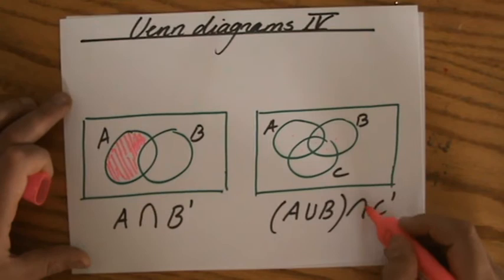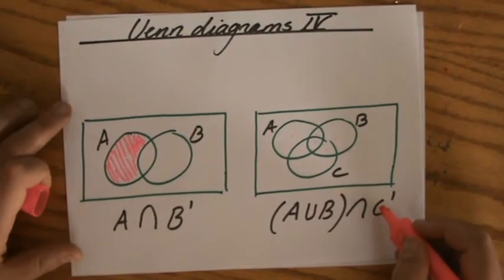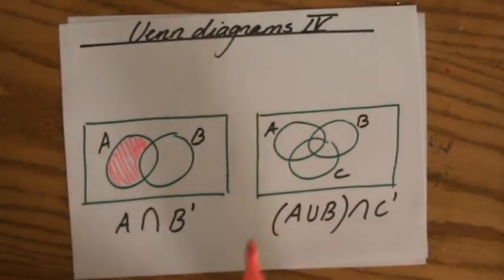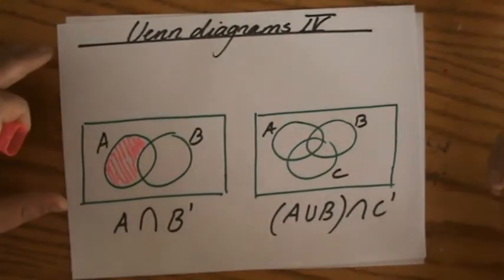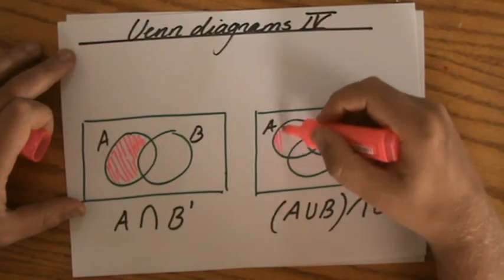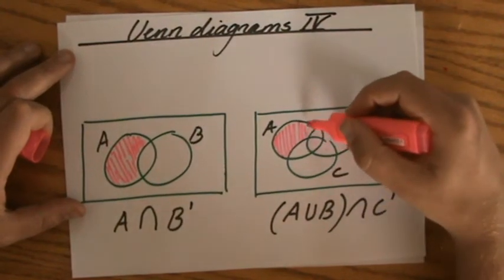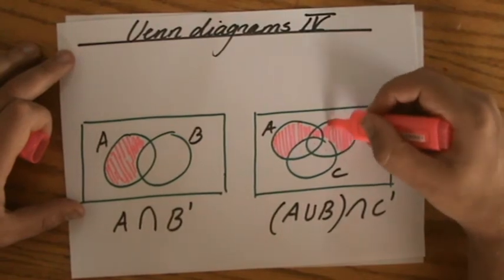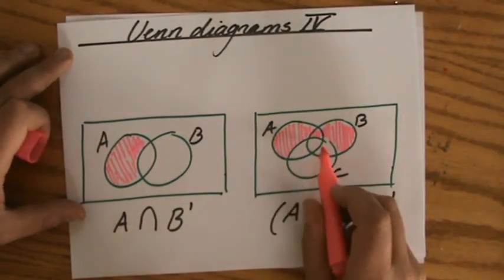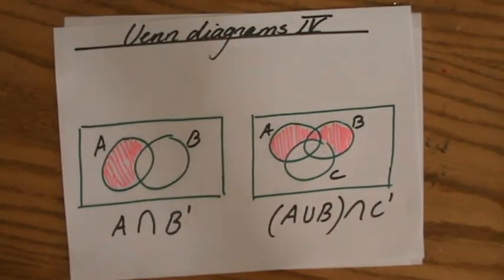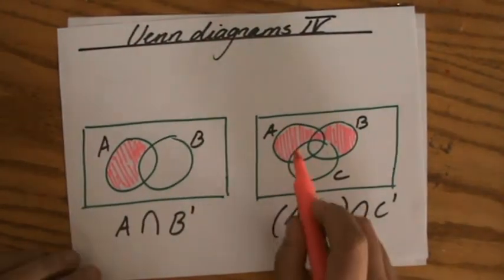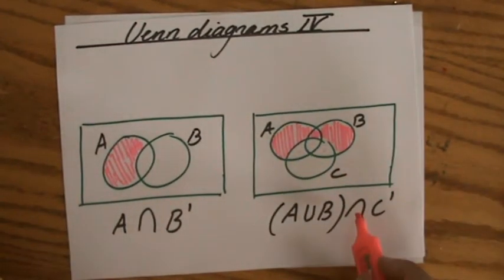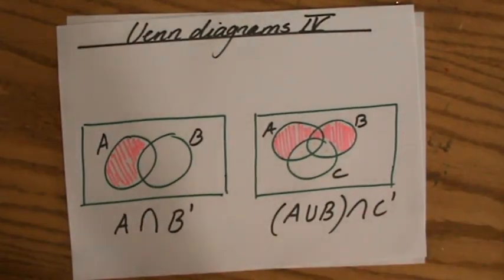It also needs to intersect with the complement set of C. So I can only shade that part that also intersects with everything outside of C. So I would be shading this now because those three dots are not the complement of C. They're actually inside of C. They're elements of C. But this is the complement set of C intersecting with the union of A and B.